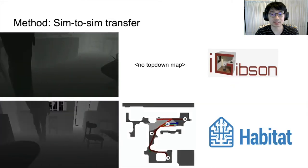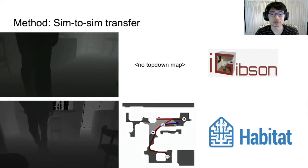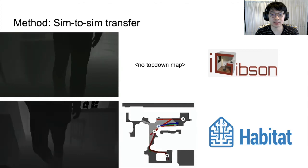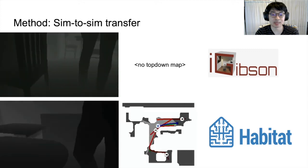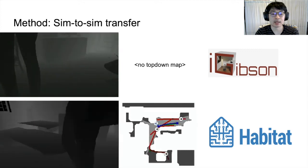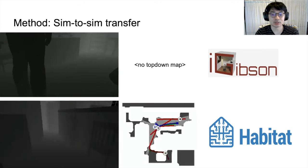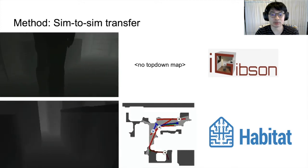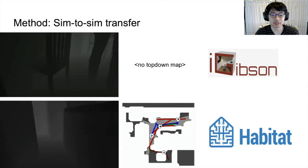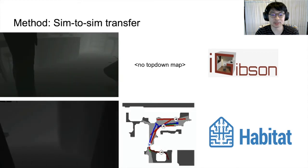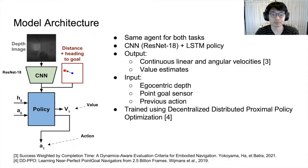This is a side-by-side comparison of the social nav task in iGibson versus Habitat. Habitat is more jittery due to a lack of acceleration and deceleration limits, though that is something that could be added.